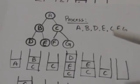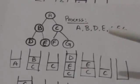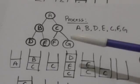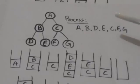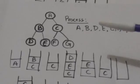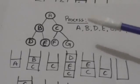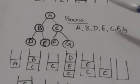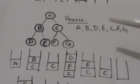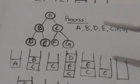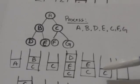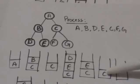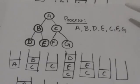Now we will pop the top element from the stack, that is node E, and process it. Node E doesn't have any child, so there is nothing to push into the stack. After this we will pop the top element from the stack, that is node C, and process it.